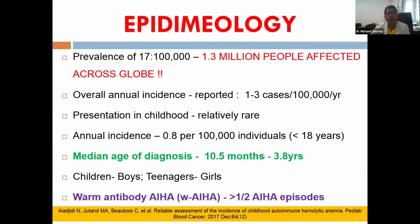In children, autoimmune hemolytic anemia is more common in boys, whereas in teenagers it is commoner in girls. Among the three main types, the warm type is the most common, responsible for more than 50 percent of cases.